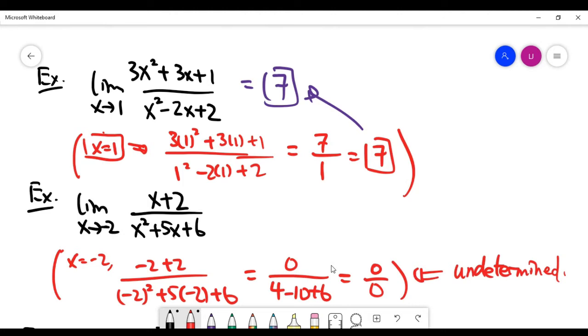And in that case, when it is undetermined, you cannot just write the answer 0 over 0. It doesn't make sense. This fraction does not make sense. You have to use a new method to attack such problem. And we can rely on some high school algebra for this case.